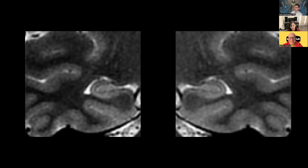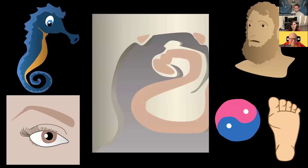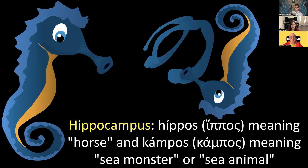These are actually normal hippocampi bilaterally, and they're actually beautiful examples of normal hippocampal architecture. So we'll talk a little bit about hippocampal anatomy, which is incredibly important in epilepsy, especially in adult epilepsy. The word hippocampus actually comes from the Greek word for horse and sea monster — so essentially, it's a seahorse. The pathologist back in ancient Greece named it that because the actual shape of the hippocampus, when you remove it, looks like an upside-down seahorse.